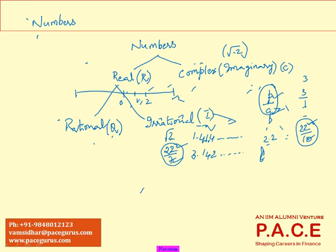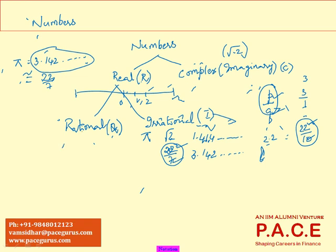If I can write a number in the form of p/q, it goes under the category of rational. For all practical purposes, pi — written as 22/7 — appears rational. But pi's actual value is 3.1415..., which never ends, so pi is an irrational number. The value 22/7 is only an approximation (≈), not the exact value, which is why pi is classified as irrational.